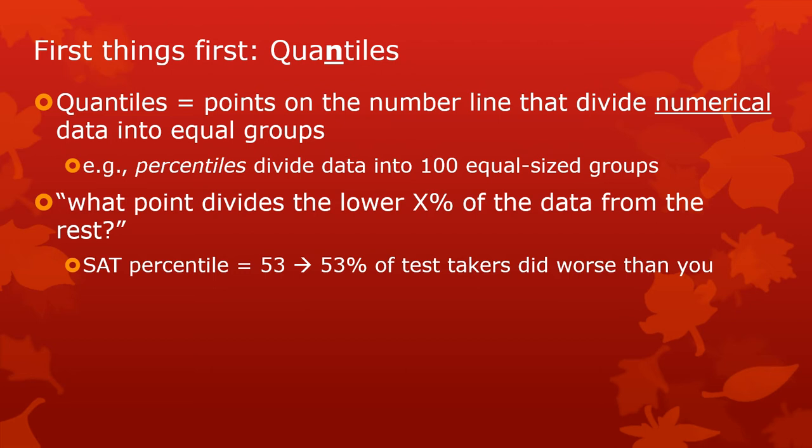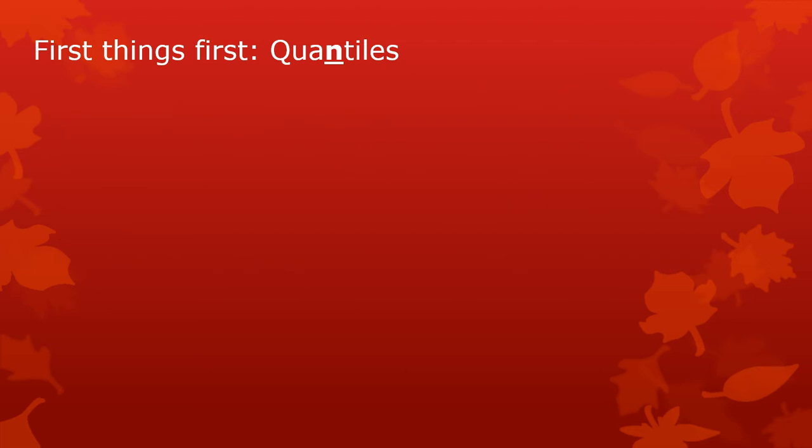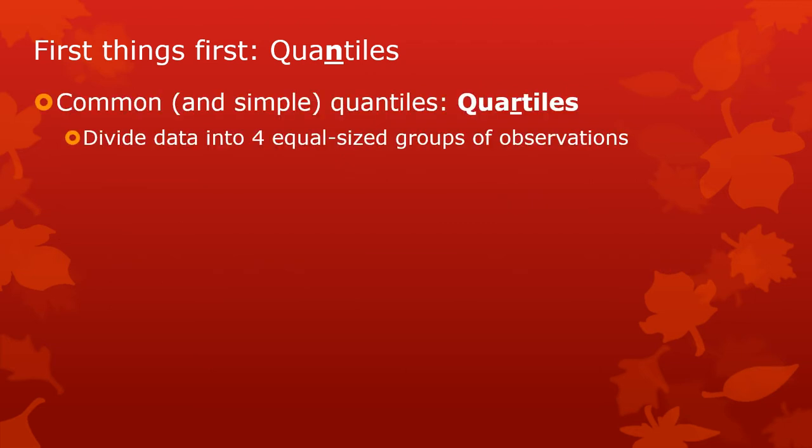If you're looking at percentiles, let's say you got a percentile score of 53. Someone says you were in the 53rd percentile. What that means is that 53% of people who took the SAT did worse than you. So you were at the dividing point between the lower 53% and the upper 47%.